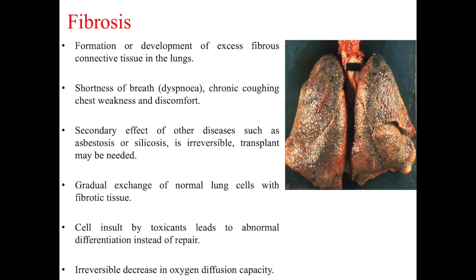Like liver fibrosis, lung fibrosis involves the deposition of collagen and formation of scar tissue, as seen in the biopsy on the right. It involves the development of excess fibrous connective tissue in the lungs, leading to shortness of breath, chronic coughing, and chest discomfort. It can be a secondary effect of diseases such as asbestosis or silicosis. It is irreversible and a transplant is often needed. There is a gradual exchange of normal lung cells with fibrotic tissue due to collagen deposition, and cell insult by toxicants leads to abnormal differentiation instead of repair, resulting in an irreversible decrease in oxygen diffusion capacity.